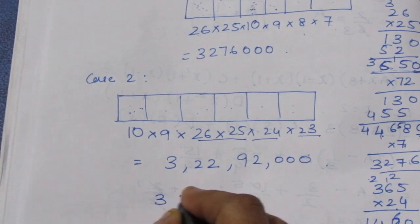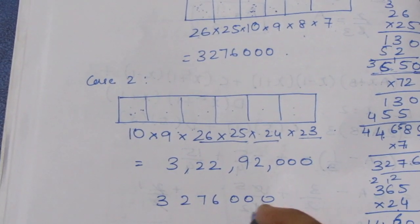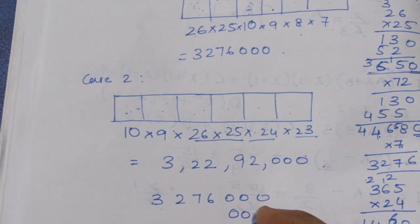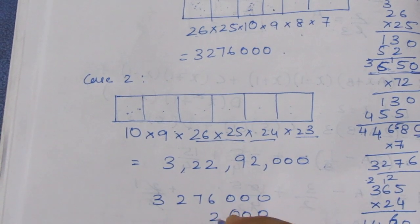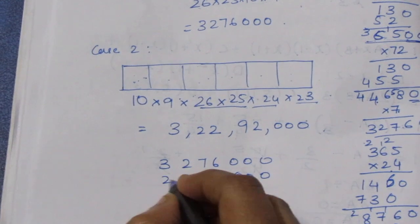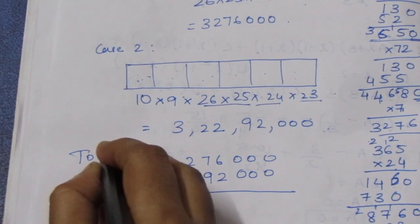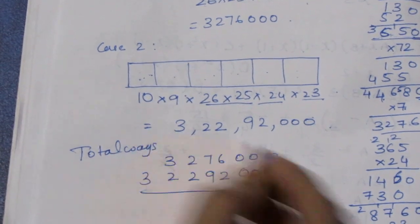10 x 9 x 26 x 25 x 24 x 23 = 3,276,000. Total Case 2: 3,276,000 + 3,229,000 = 3,556,800.